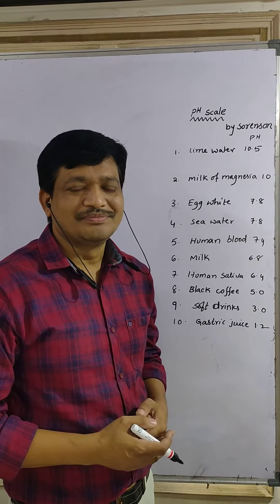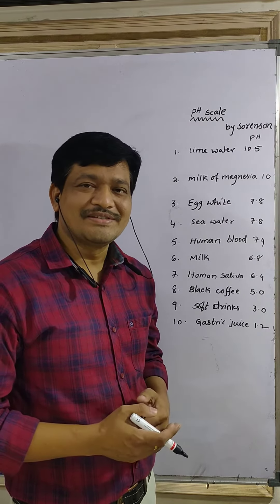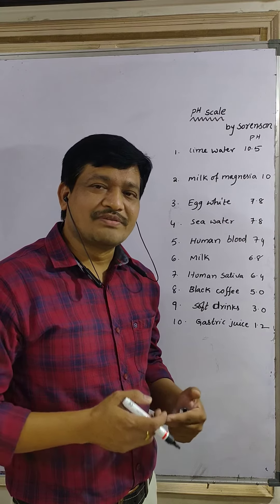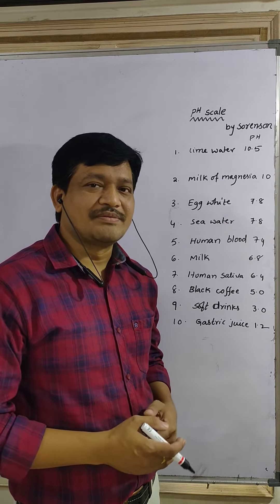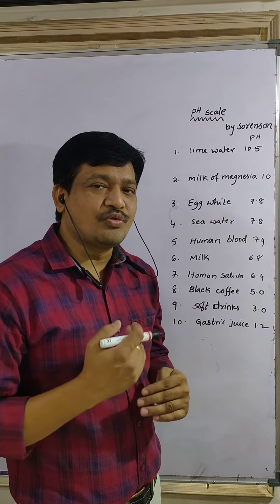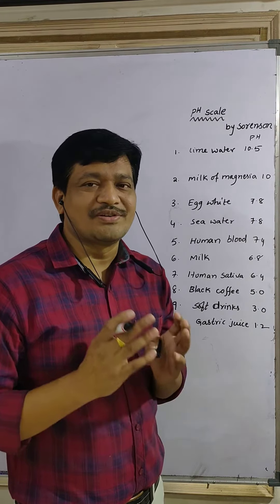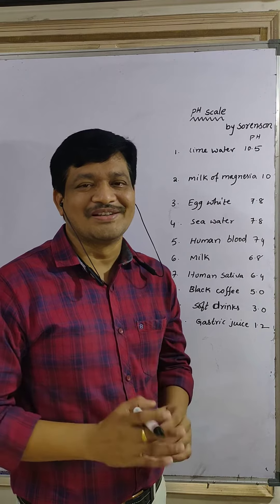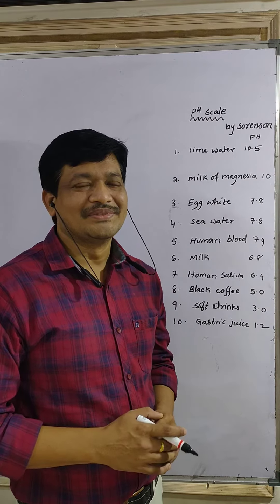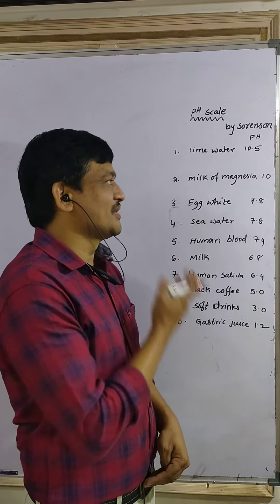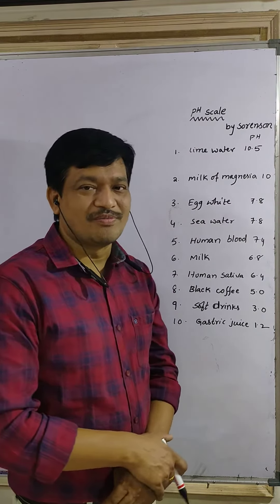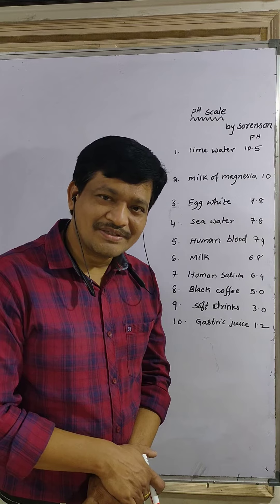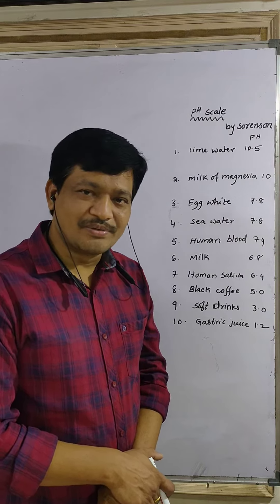Above 7, pH is basic in nature. For pure water, pH equals 7 — pure water is neutral. Is it clear? These are some important compounds and their pH values. Okay, thank you.